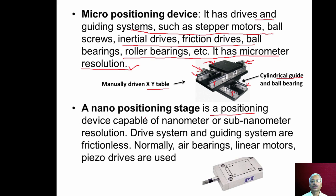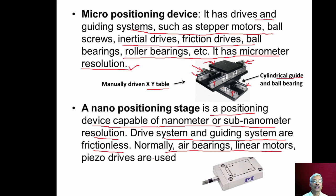Nano-positioning devices are capable of nanometer or sub-nanometer resolution. Their drive and guiding systems are frictionless. Normally air bearings, linear motors, and piezoelectric drives are used in nano-positioning stages. A commercially available nano-positioning device has a stage to keep the workpiece, with ranges such as 0 to 50 or 0 to 100 micrometers available with nanometer or sub-nanometer resolutions.